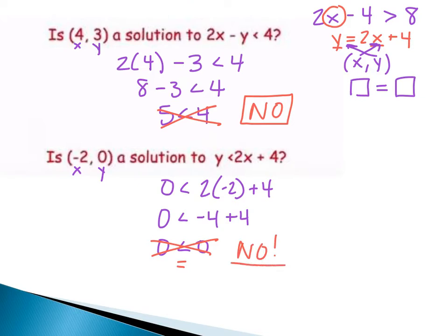Here's the key point: in order for a point to be a solution to an inequality, it must satisfy the inequality. That's different from equations. The point (-2, 0) would be true for an equation, but is not true for the inequality. 5 is not less than 4, so that point is also not a solution. In order for a point to be a solution, it must make the inequality true.